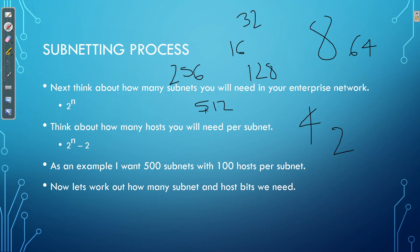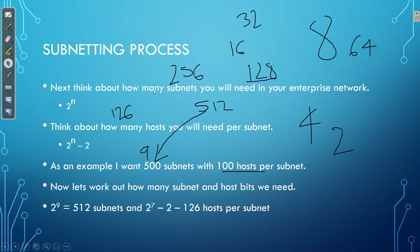2 to the power of 9 gives me 512. 512 encompasses 500, which means I need at least 9 subnet bits in order to meet my requirements of 500 subnets. Now let's move over to hosts per subnet — I need 100. 2 to the power of 7 gives me 128; 128 minus 2 is 126. So with 7 host bits I get 126 usable IP addresses, which meets my requirements for hosts per subnet.